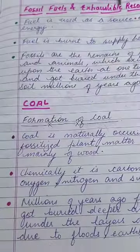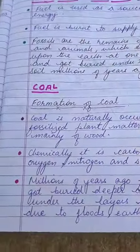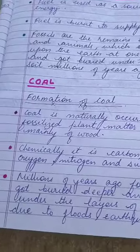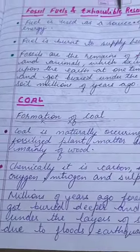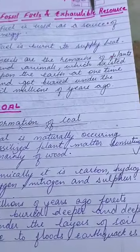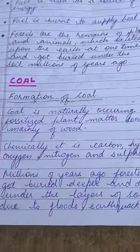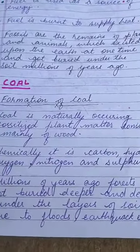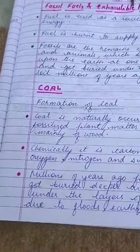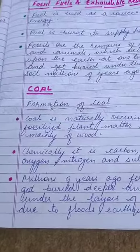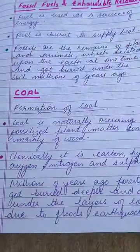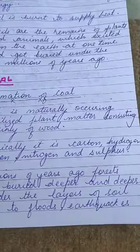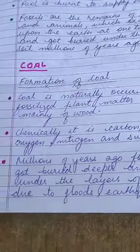Chemically, the composition of coal contains carbon, hydrogen, oxygen, nitrogen, and sulfur. Now, how is coal formed? Millions of years ago, forests got buried deeper and deeper under layers of soil.